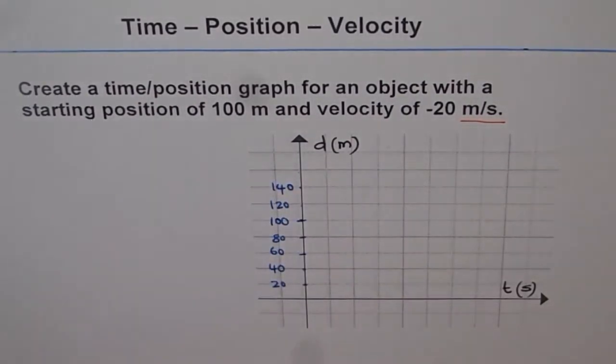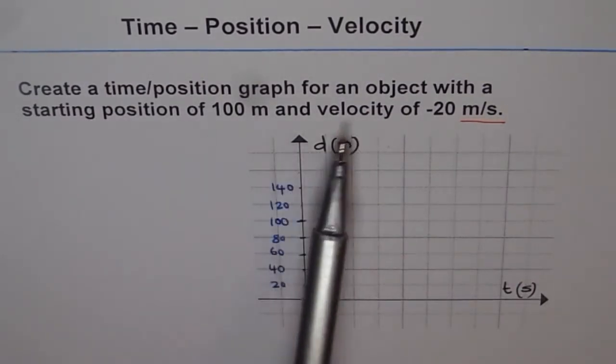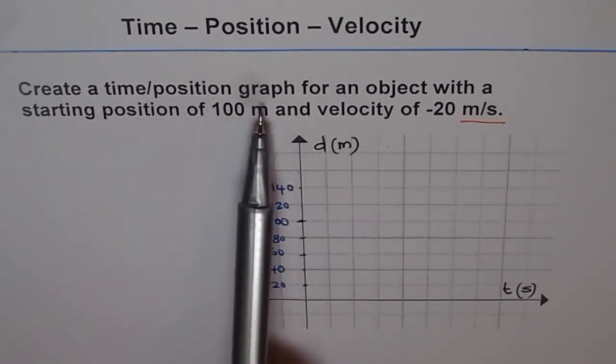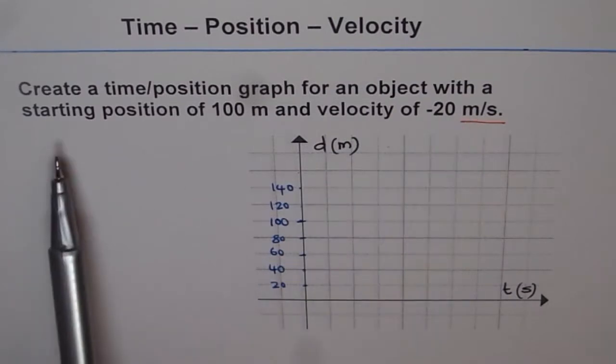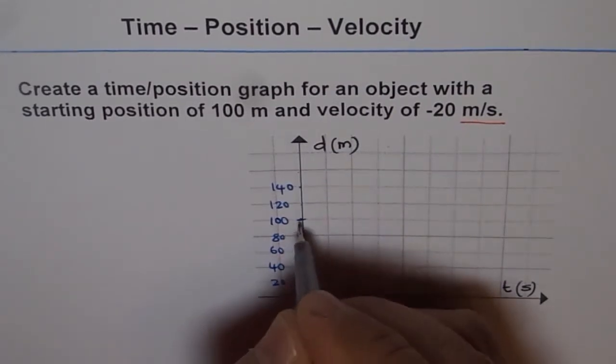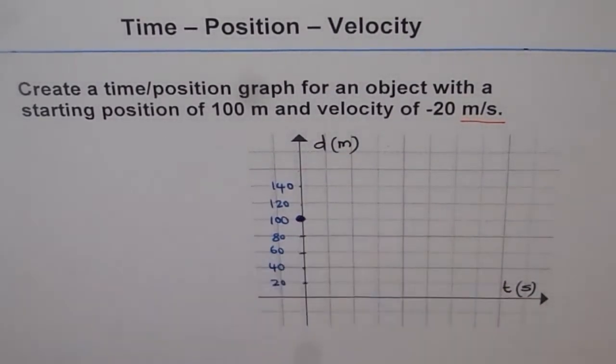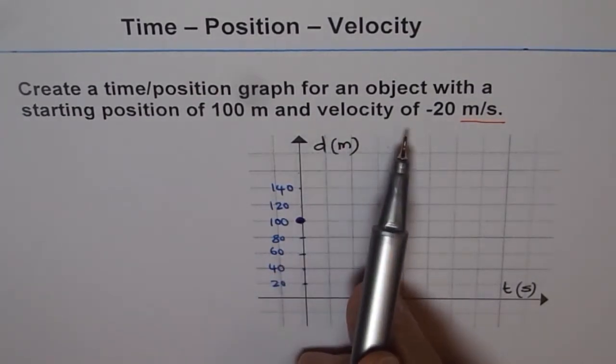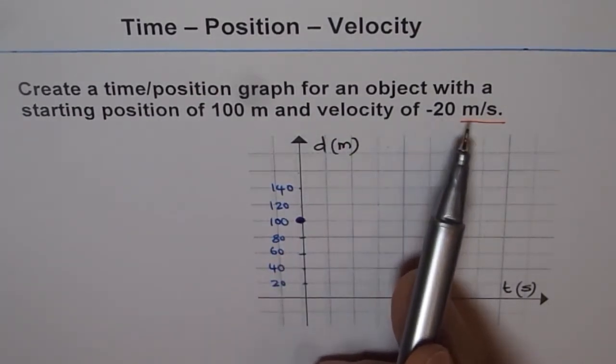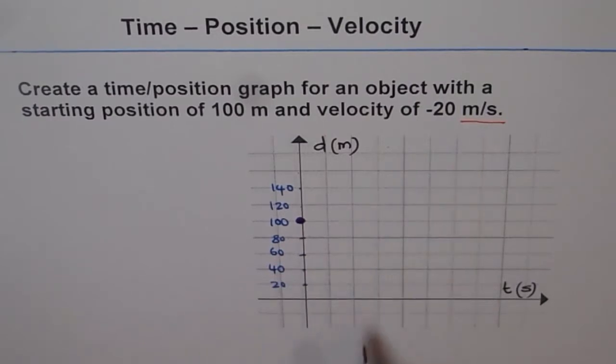Now, as given, create a time position graph for an object with starting position of 100 meters. So that is the d-intercept, starting position at 100 meters. And velocity is minus 20 meters per second.